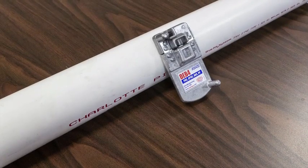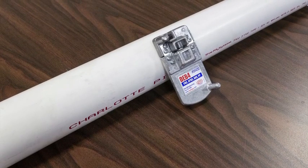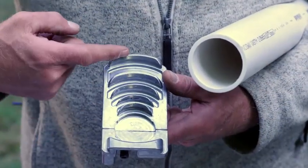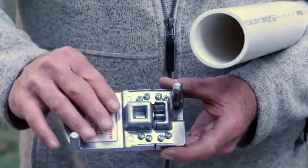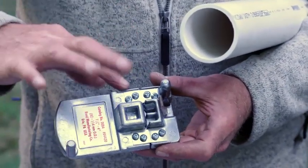DEB4 stands for deburring up to four inch, so the DEB4 will do inch and a quarter all the way up to four inch pipe and put a 15-degree bevel on it. It is spring-loaded so it will snap on the end of the pipe properly.